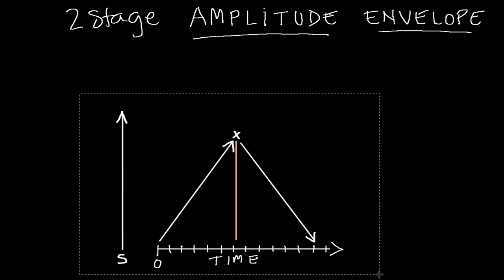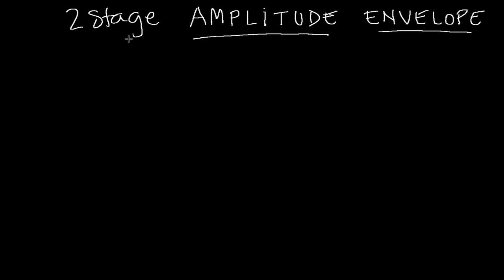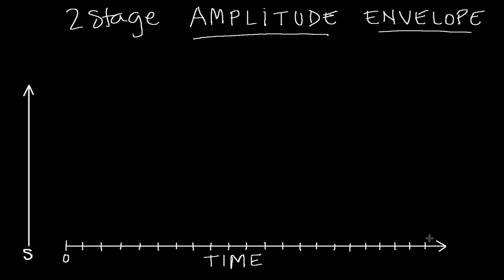Let's look at an example of a snare drum — a two-stage amplitude envelope is fine to tell us what the loudness of a simple sound is going to do over time, like a snare drum. There's time starting at zero seconds working forward in tenth-of-a-second increments, and on the vertical axis is loudness from silence up to the loudest level. We hit our snare drum starting at zero time.